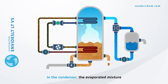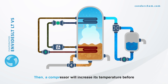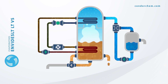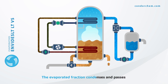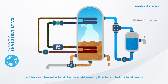In the condenser, the evaporated mixture passes its heat to the cold refrigerant. Then, a compressor will increase its temperature before being reintroduced into the submerged exchanger. The evaporated fraction condenses and passes to the condensate tank before obtaining the final distillate stream.